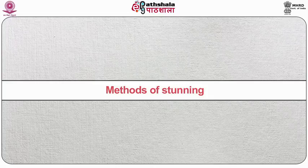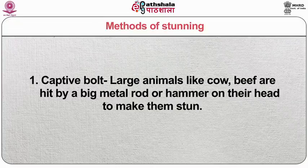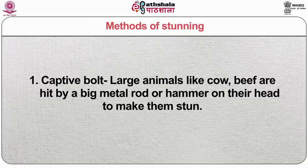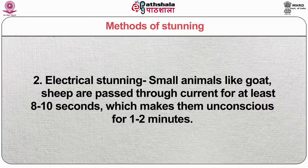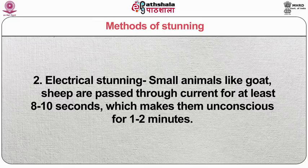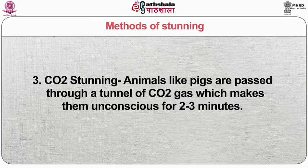Methods of stunning: captive bolt — large animals like cows and beef are hit by a big metal rod or hammer on their head to make them stun. Electrical stunning — small animals like goat and sheep are passed through current for at least 8 to 10 seconds, which makes them unconscious for 1 to 2 minutes. CO2 stunning — animals like pigs are passed through a tunnel of carbon dioxide gas, which makes them unconscious for 2 to 3 minutes.